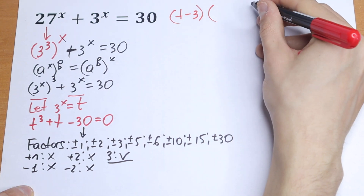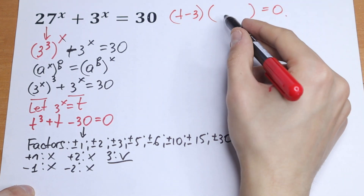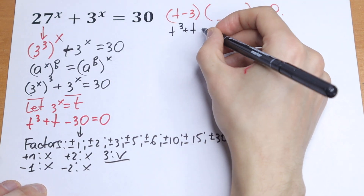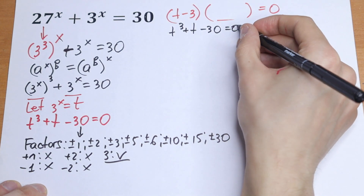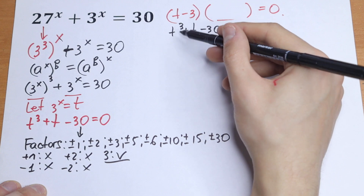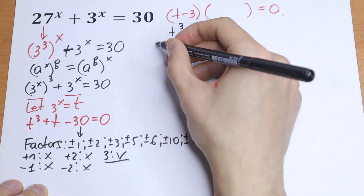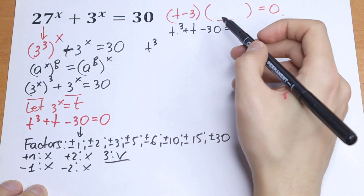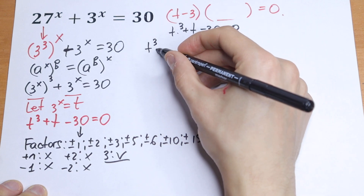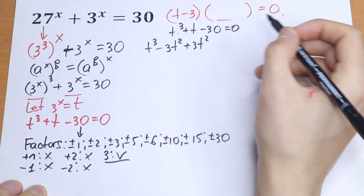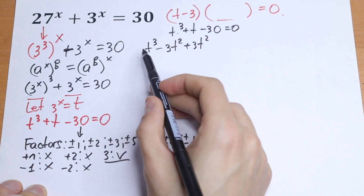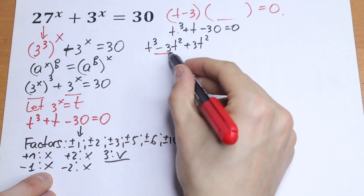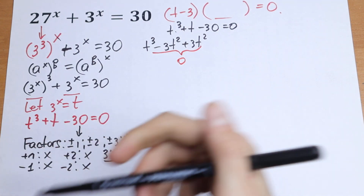We need to find our second factor. I want to suggest a little trick here: since we have t cubed plus t minus 30 but no t squared term, we can add and subtract 3t squared. So we write t cubed minus 3t squared plus 3t squared, and this equals zero — we change nothing.